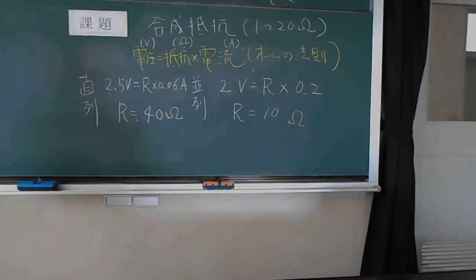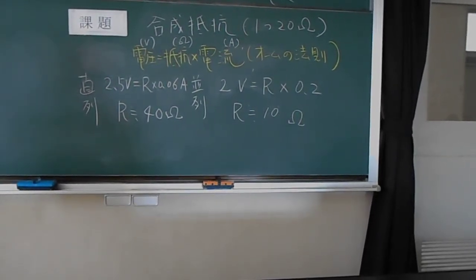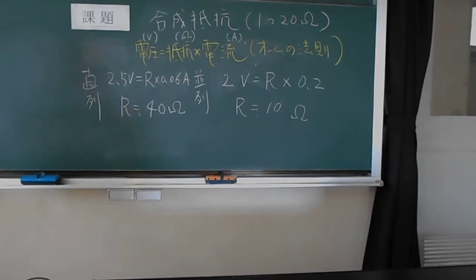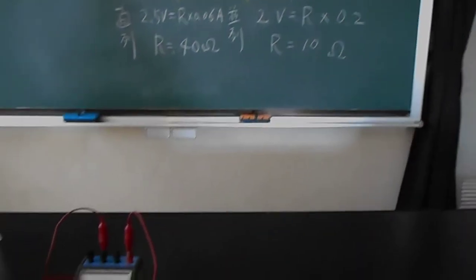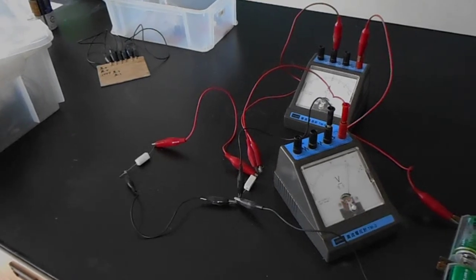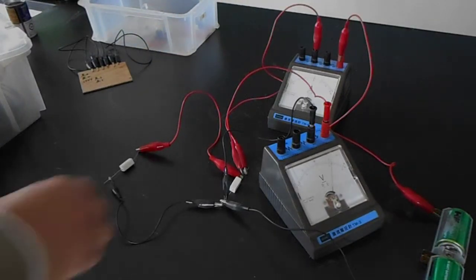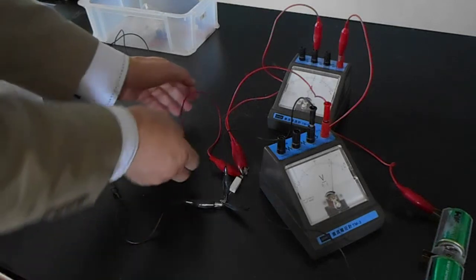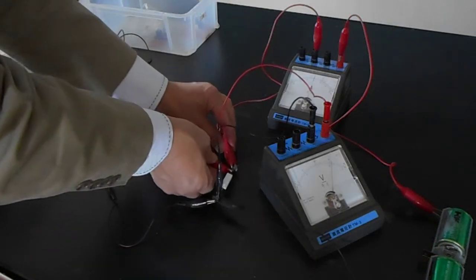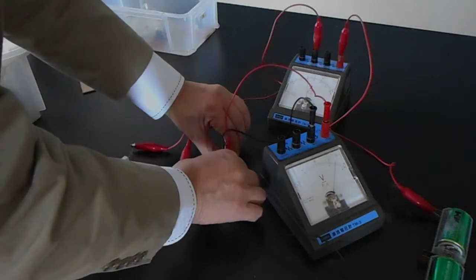One is 20 Ohm of the pressure. It is connected to the combined pressure. The voltage is about 2V. The voltage is about 0.2A of the figure.